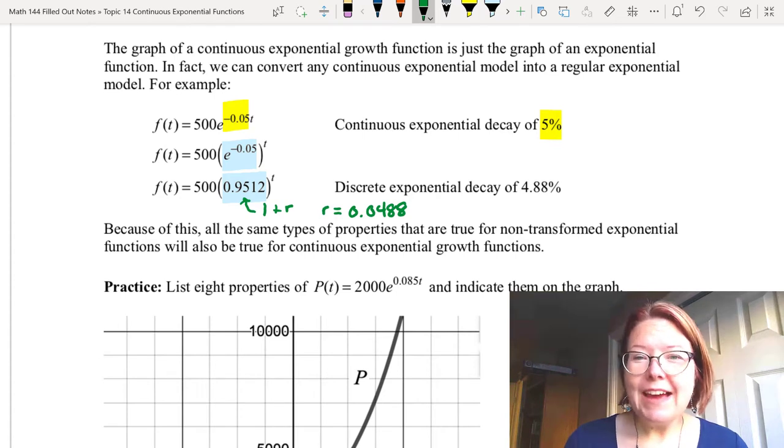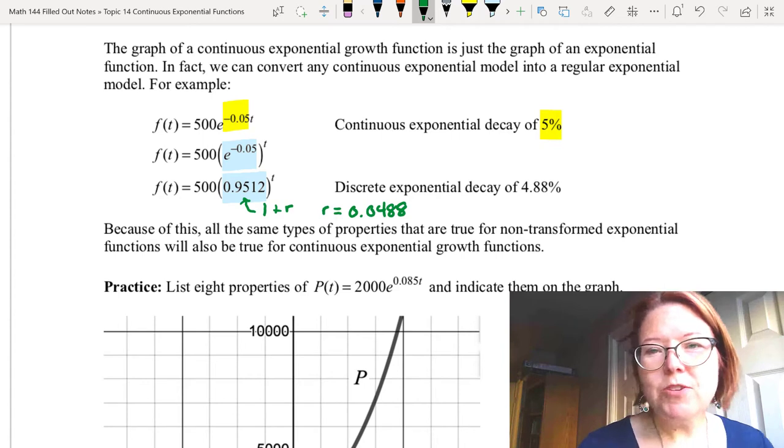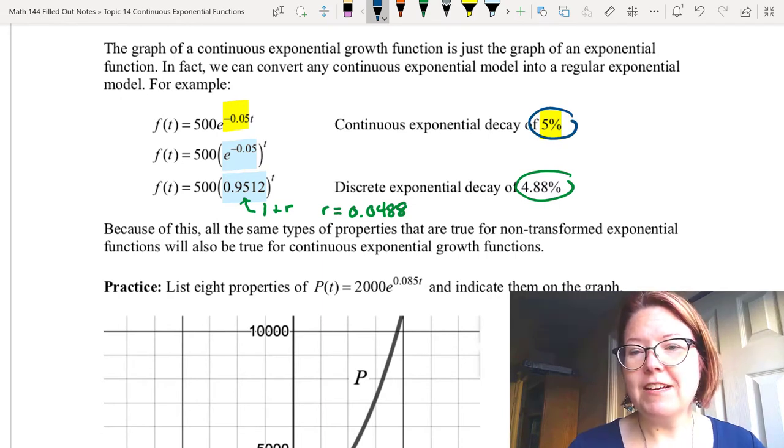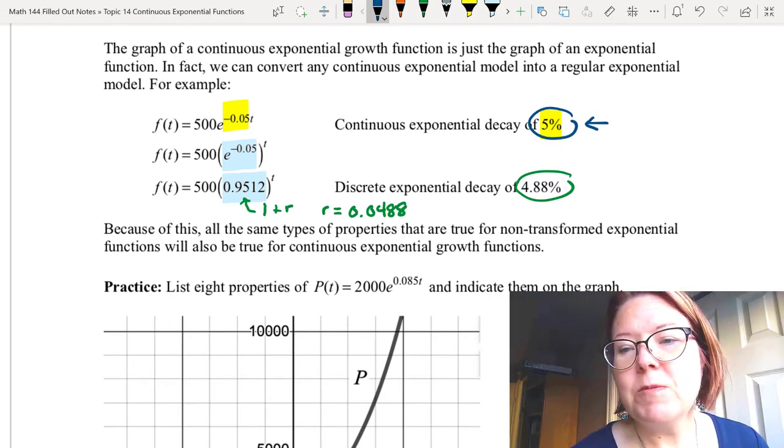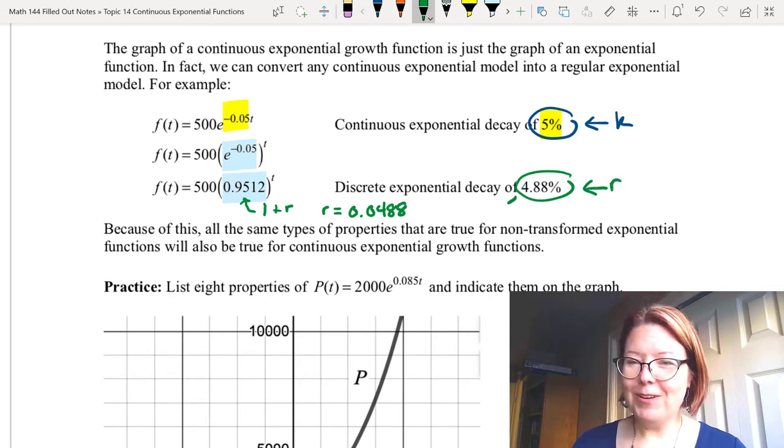So anytime we have a continuous exponential model you could rewrite it as a discrete model but do notice that the rate for the discrete model is not the same thing as the rate for the exponential model. The 5 percent is a k value. The 4.88 percent is an r value and technically it would be a negative r value as well.